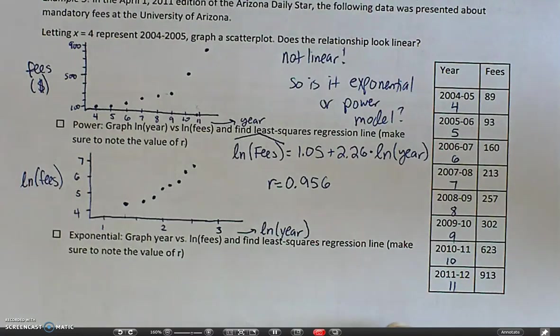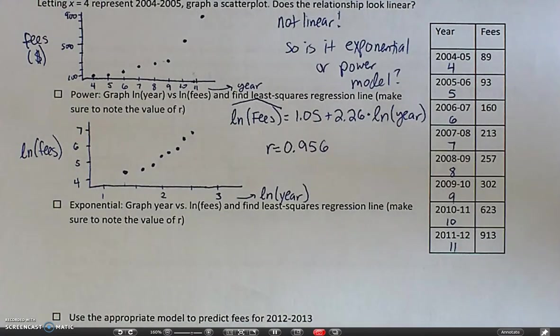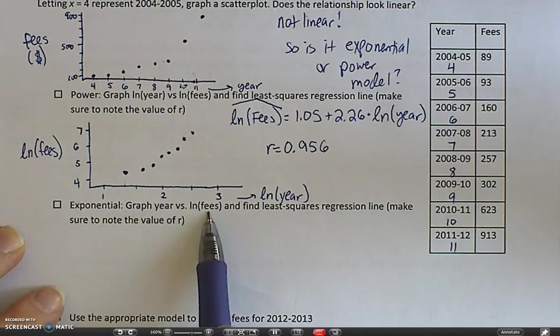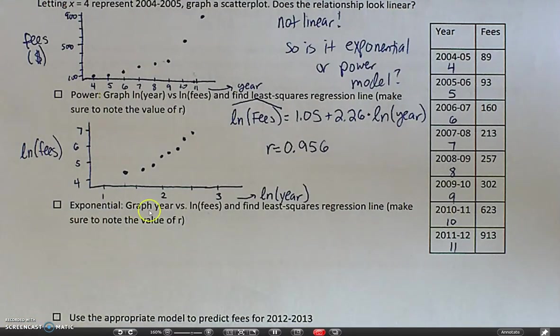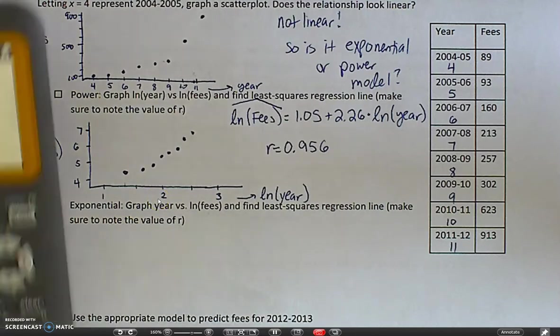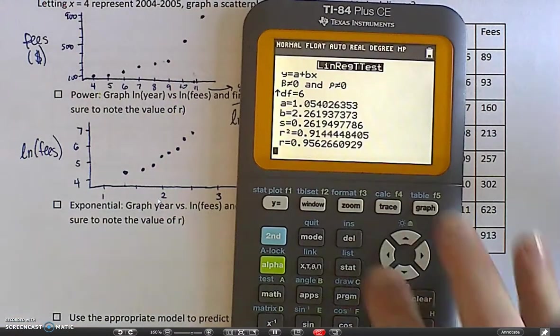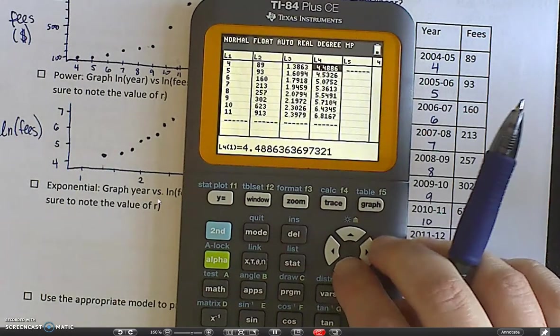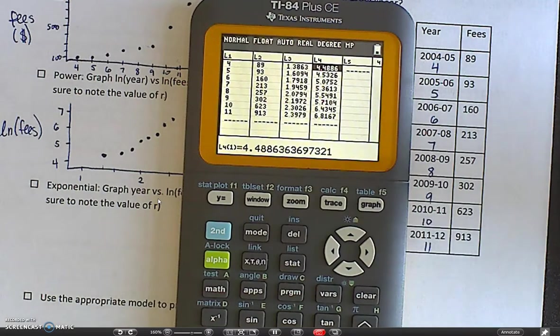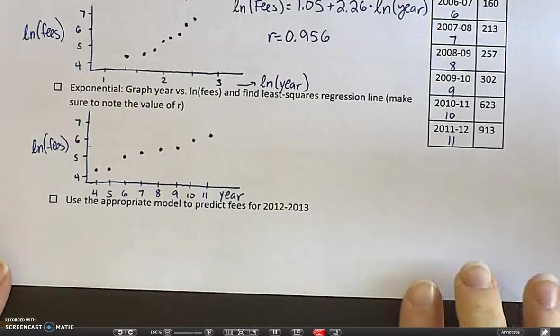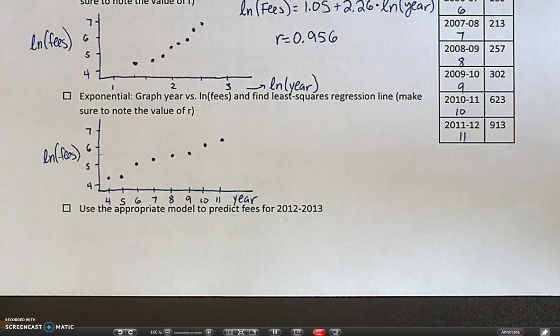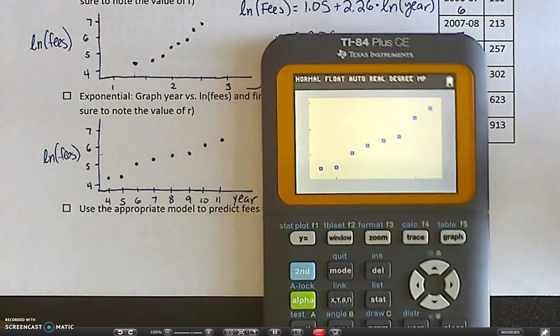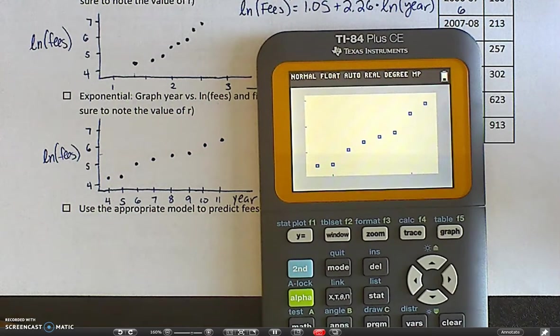The equation of the line that has the stronger r is going to be the better fit, the one that's more linear. So now let's see how the exponential model fits. Again, we're going to do a graph, but instead of graphing the natural log of the year versus the natural log of fees, we just want to graph the year versus the fees. So we're going to do it for our years, which is located in our first list, 4, 5, 6, through 11. And then the natural log of my fees, which was in list four.